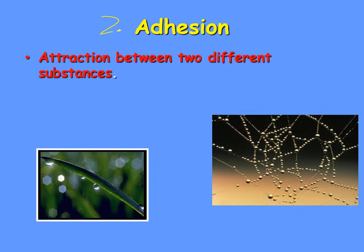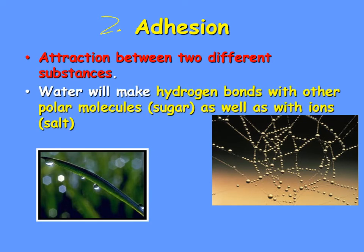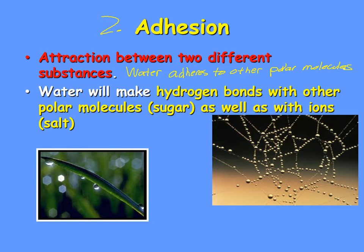Here's your definition: attraction between two different substances. Water can exhibit adhesion to other things that are polar. Water adheres to other polar molecules. So water can only exhibit adhesion to other molecules that have positive and negative ends. The why: water will make hydrogen bonds to those other polar molecules.